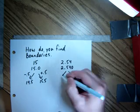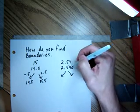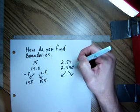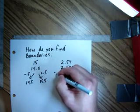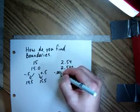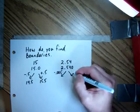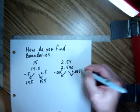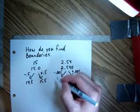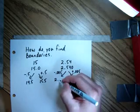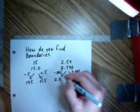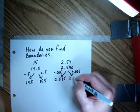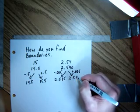Once you're there, you add and subtract 5 in this place value. That's in the thousandths place value. So you're going to subtract 0.005, which is 5 thousandths, and add 0.005, 5 thousandths. You're going to get 2.535 and 2.545.